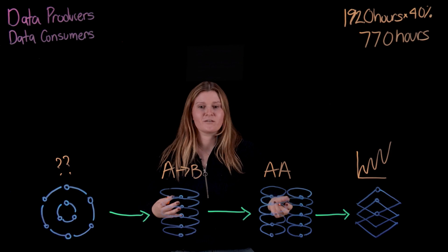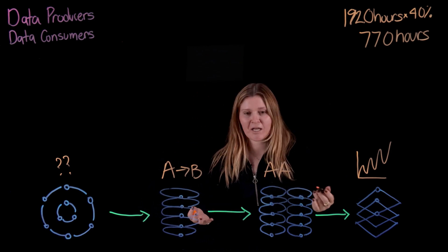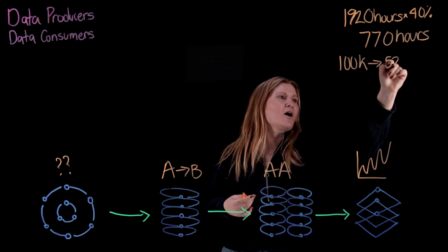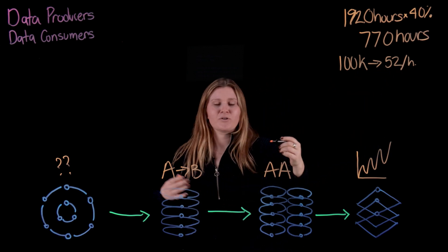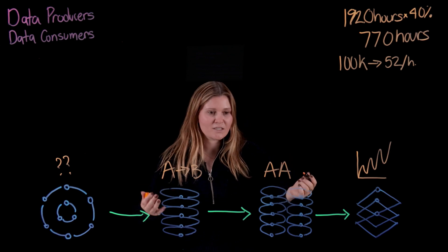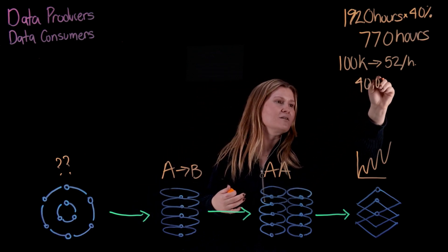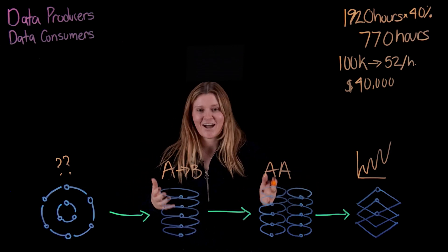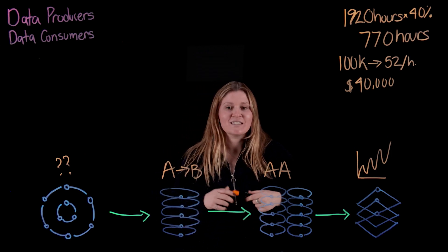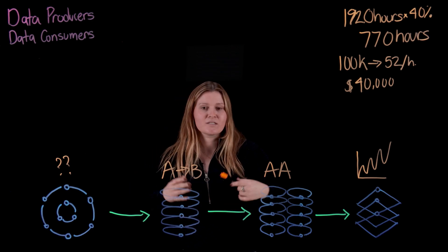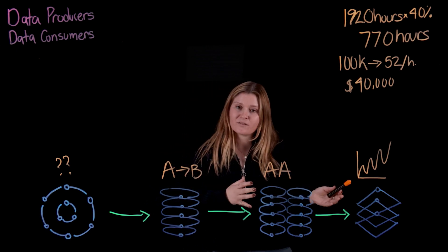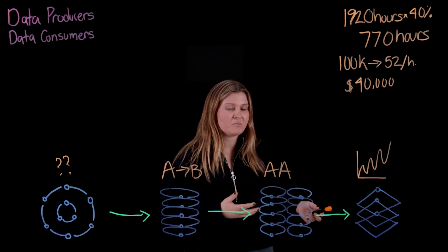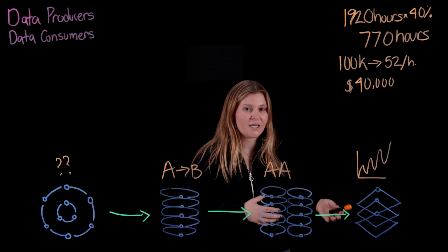Let's break that down further. On average, a data engineer has an annual salary of $100K, which correlates to about $52 per hour. If we multiply $52 per hour by the 777 hours they're spending, that is $40,000 being spent just detecting and resolving data issues. I think we can all agree that is not a very good use of time. Data engineers need to be able to detect things earlier, especially unknown data incidents. When they are reactive in nature, they're forced to rely on their data analysts or data scientists to uncover data issues — meaning data quality problems are discovered too late, or not at all.